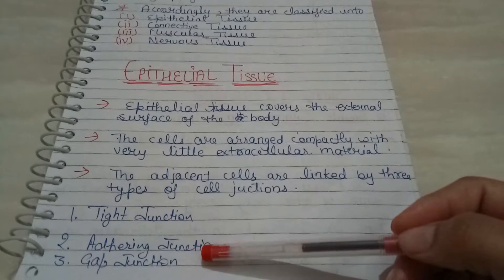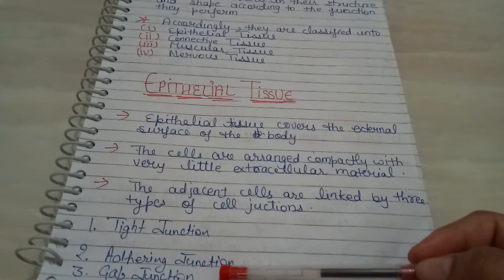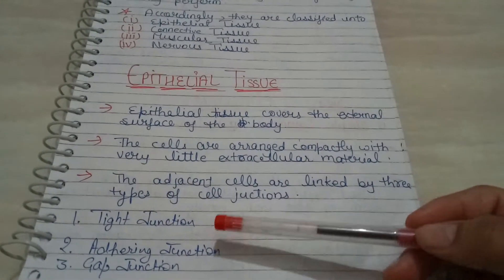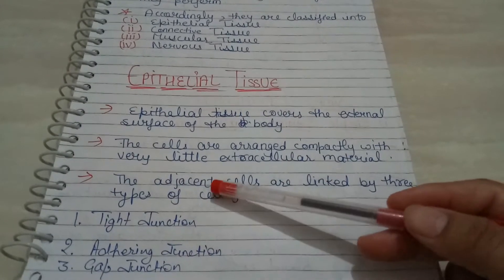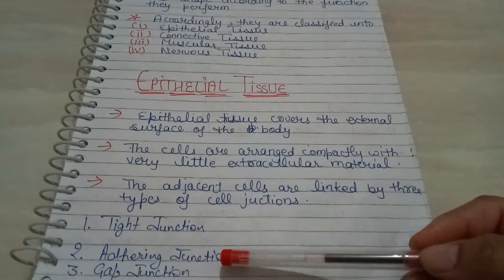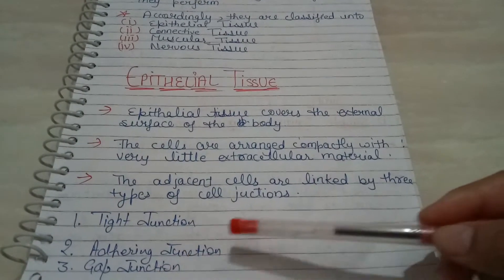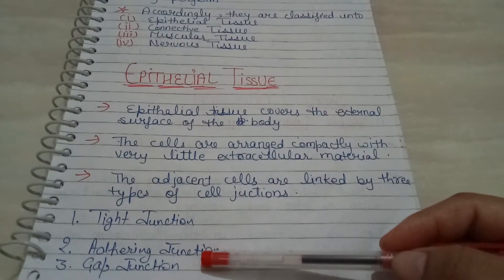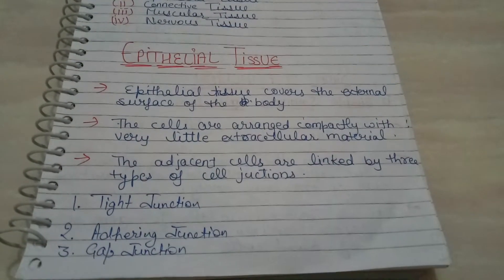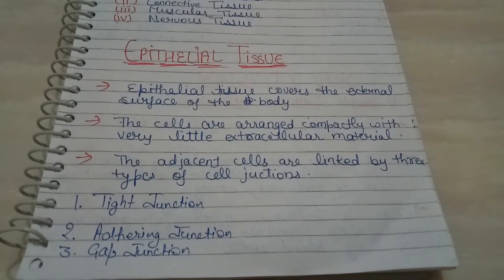Tight junctions help to stop substances from leaking across a tissue. It means tight junctions prevent leakage — the substance from one cell doesn't leak. Now, adhering junction performs cementing to keep neighboring cells together.